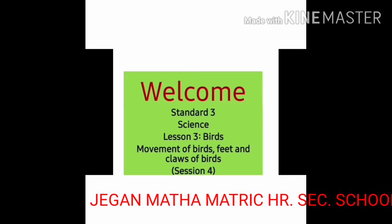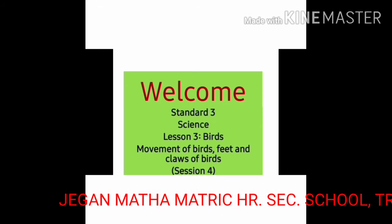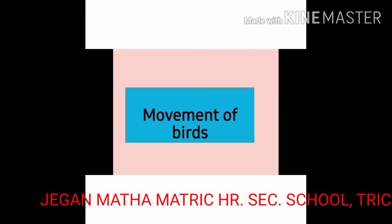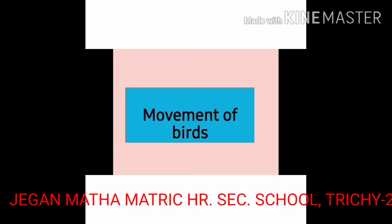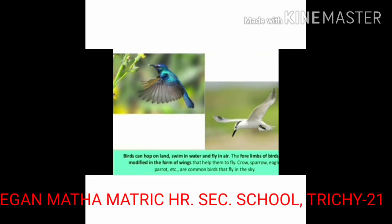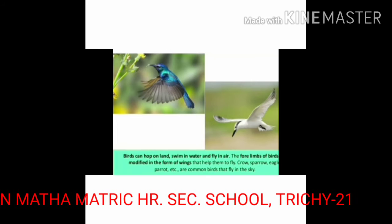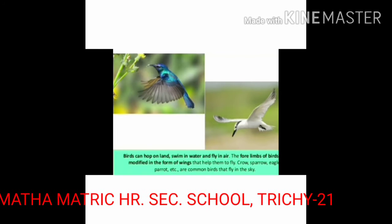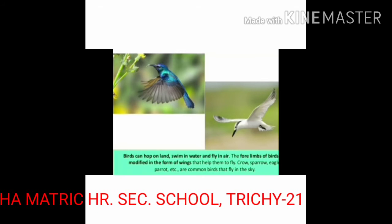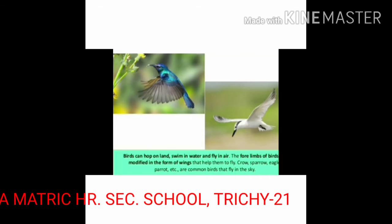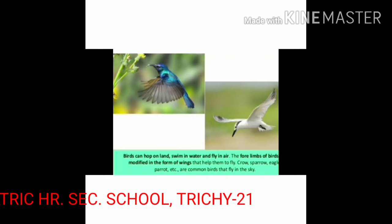Today, we are going to learn about movement of birds and feet and claws of birds. Birds can walk on land, swim in water and fly in air. The four limbs of birds are modified in the form of wings that help them to fly. Crow, sparrow, eagle, parrot etc. are common birds that fly in the sky.